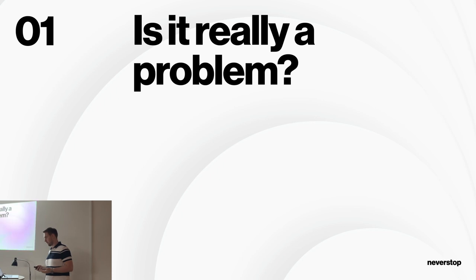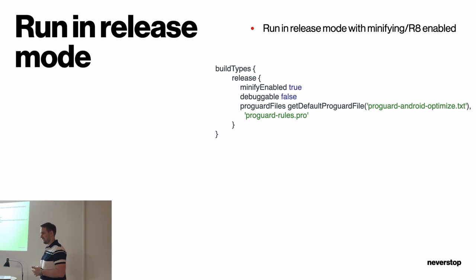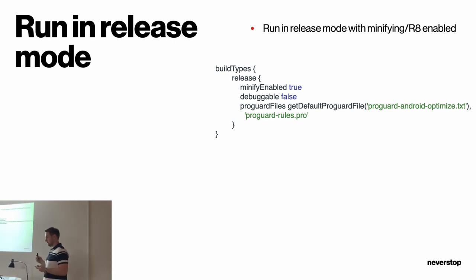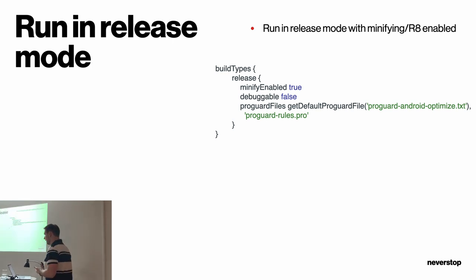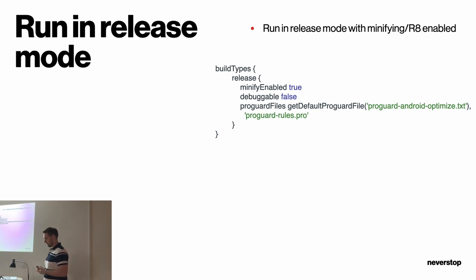First, run your app in release mode. It's a general good practice on Android, because by running in release mode, you disable debug mode, which adds a huge performance hit by enabling debugging the code and stepping in. Also, R8 — previously known as ProGuard — removes unnecessary code from the APK and optimizes it.